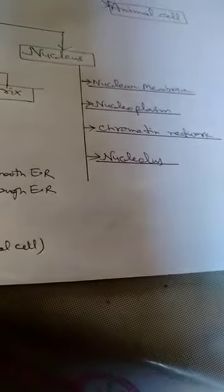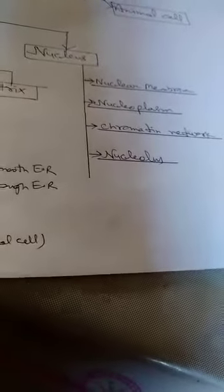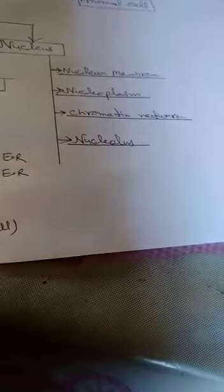Then, here third part and important part is nucleus, brain of the cell. That consists of four parts. First one is covering nuclear membrane just like cell membrane. Then, second one is nucleoplasm. The liquid medium found inside the nucleus.